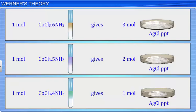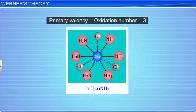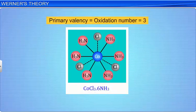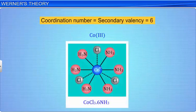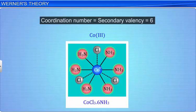Werner deduced that in CoCl3.6NH3, the primary valency or oxidation state of +3 is satisfied by 3 chloride ions. The coordination number of the cobalt 3+ ion is 6. As there are 6 ammonia molecules in the compound, they alone satisfy the 6 secondary valencies of cobalt. The primary valencies are represented by dotted lines and the secondary valencies by thick lines.